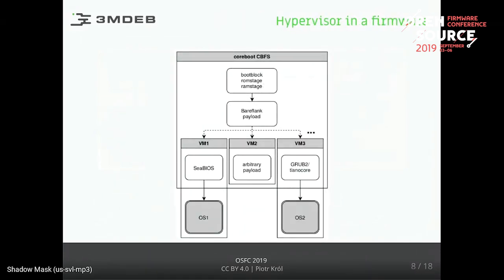Here's how it looks in firmware — this is what we built. We have the typical coreboot boot phases: boot block, ROM stage, and RAM stage. From RAM stage, as a payload, we created a 3M Bearflank payload which creates a hypervisor. This hypervisor can then run various VMs — for example, in one VM we may have SeaBIOS, in another an arbitrary payload, an RTOS, or we can use GRUB to boot an operating system.